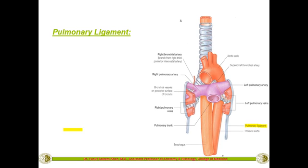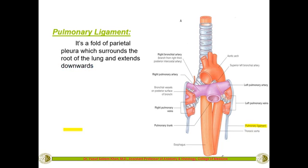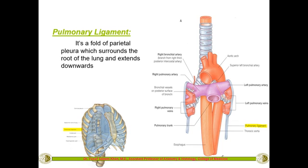The last and most important feature of the pleura is the pulmonary ligament. This is not a true ligament — it is a part of the pleura hanging around the hilum of the lung. At the hilum you can see structures like the primary bronchus dividing into secondary bronchi, pulmonary veins, and pulmonary arteries — all entering or leaving through the hilum.